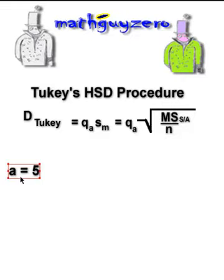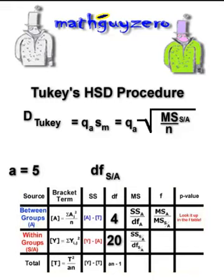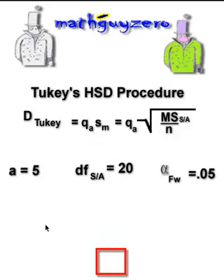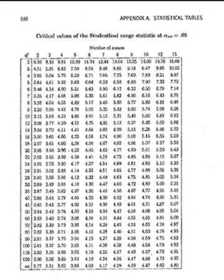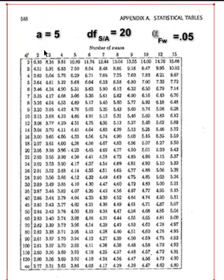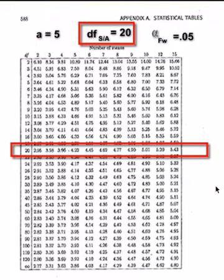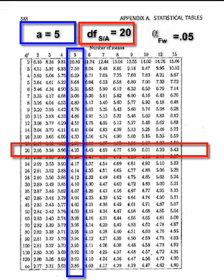To calculate Q sub A, we need the degrees of freedom from our within-group from our ANOVA table. The one we calculated with the rat data was 20. Now we decide what our alpha level is going to be — that FW means family-wise alpha level, normally 0.05. We go to the table, make sure we're on the right page for alpha 0.05. The top row gives the number of groups and the vertical row gives the degrees of freedom. We go to the degrees of freedom row 20, where it intersects with column 5. That number is 4.23.